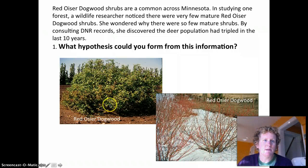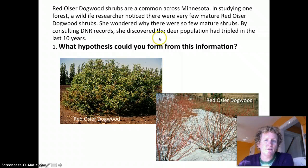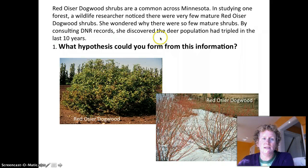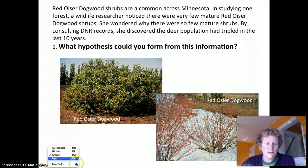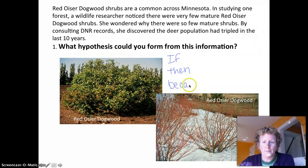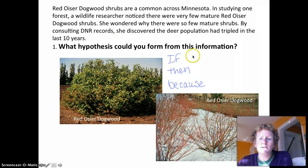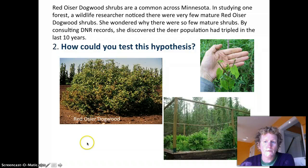Let's talk about the scientific method. Red osier dogwood shrubs are common across Minnesota. A wildlife researcher noticed very few mature shrubs and wondered why. By consulting DNR records, she discovered the deer population had tripled in the last 10 years. A good hypothesis often starts with 'if... then... because.' For example: if there are more deer, then they'll eat more shrubs, because deer really like eating red osier dogwood.